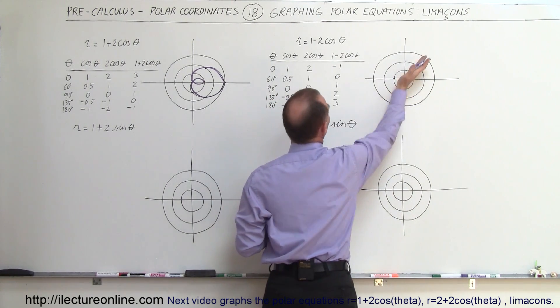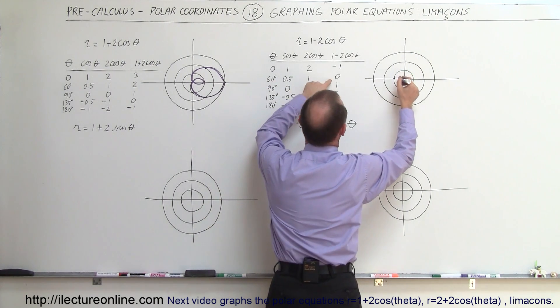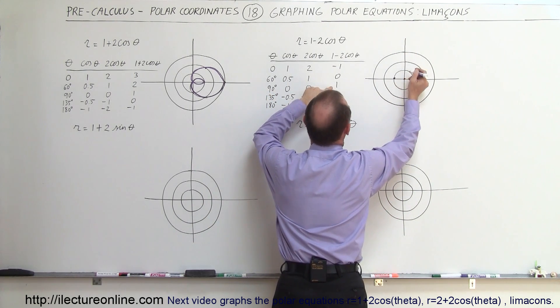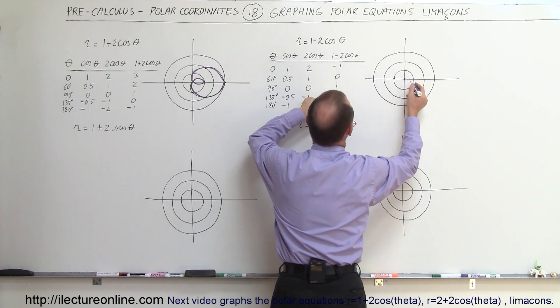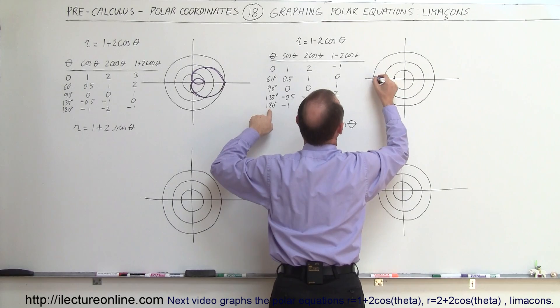When we're pointing at an angle of 60 degrees this way, it is equal to 0. So then 0, that puts us right there. If we point at an angle of 90 degrees is equal to 1, so that would be equal to there. And then at 135 degrees, it's equal to 2, so it would be over here. And at 180 degrees, it's equal to 3.